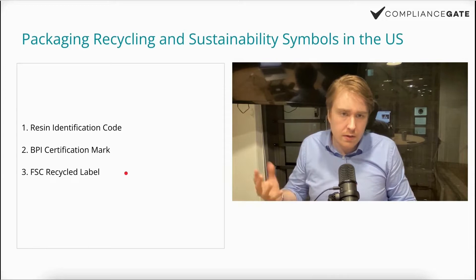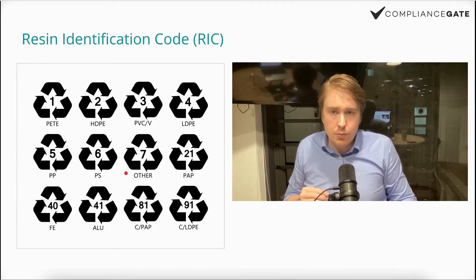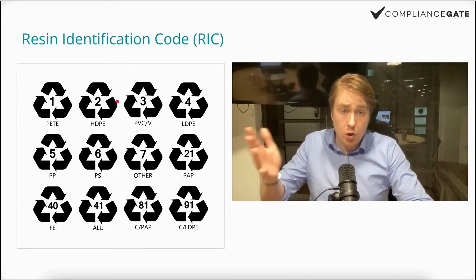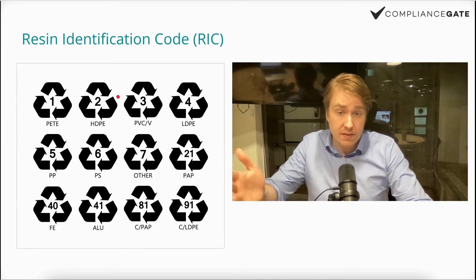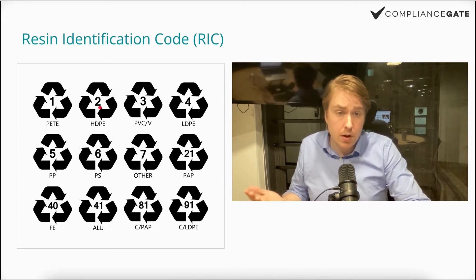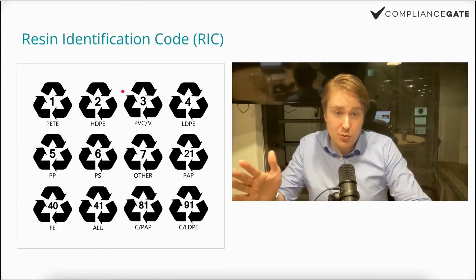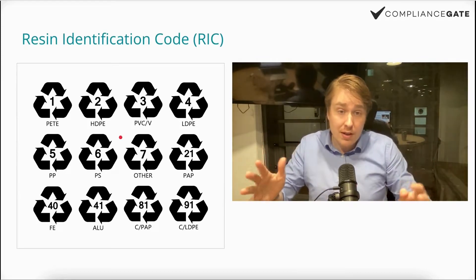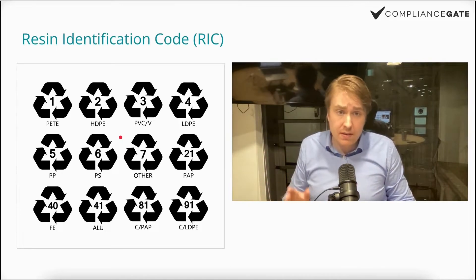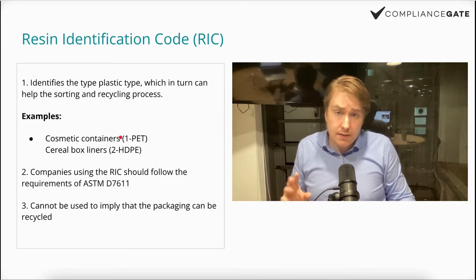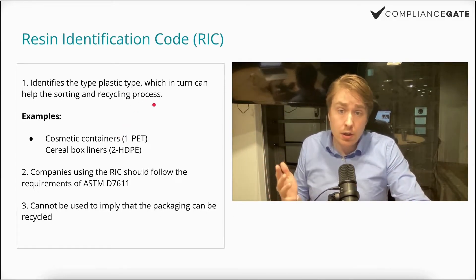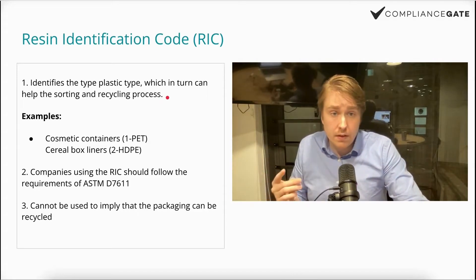Let's begin with the Resin Identification Code. It essentially consists of a Mobius loop combined with a code that identifies the type of resin or type of plastic — it could be PP, HDPE, PET, etc. Don't take a screenshot right now because this is just a stock photo; I'm not sure if these codes are accurate or up to date. I think you actually have to buy the ASTM standard for this. The RIC identifies the plastic type.